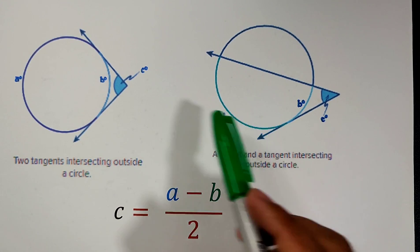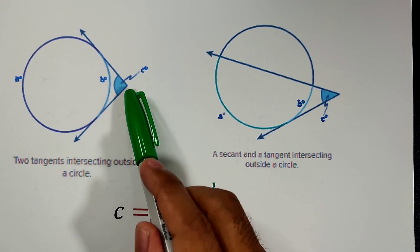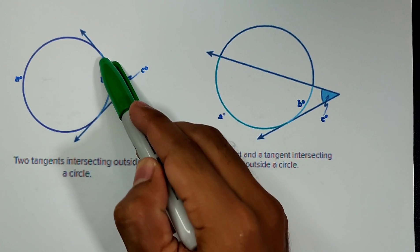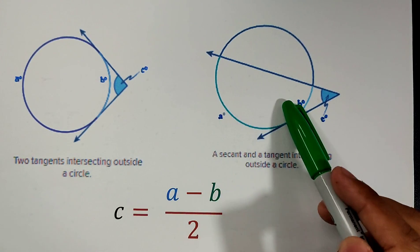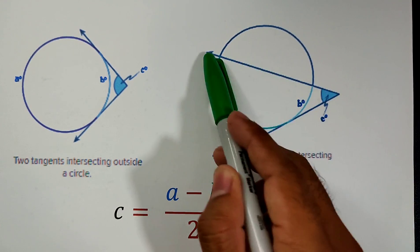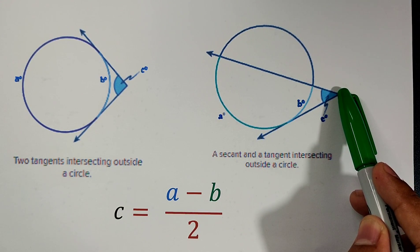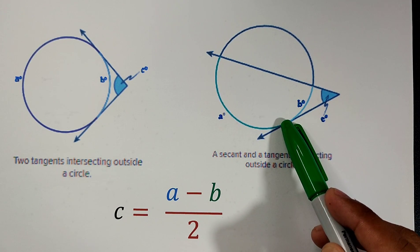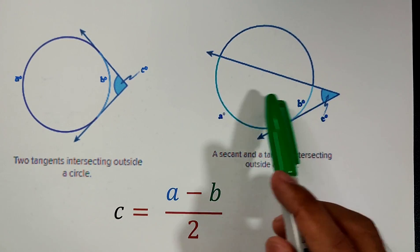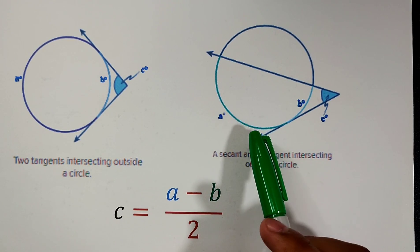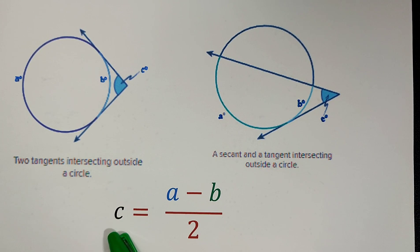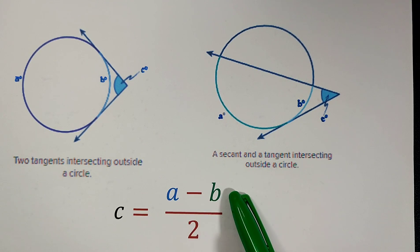The same applies to the other figures. In figure 2, two tangents intersect outside of the circle, forming two intercepted arcs, A and B. In figure 3, a secant and a tangent intersect outside of the circle, also forming two intercepted arcs, A and B. According to the theorem, the formula is C = (A − B) / 2.